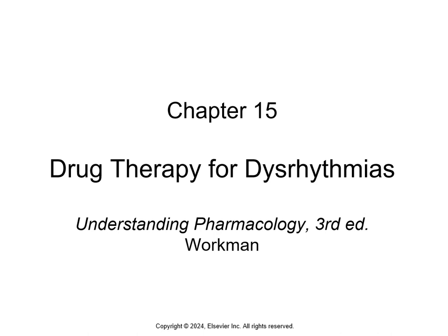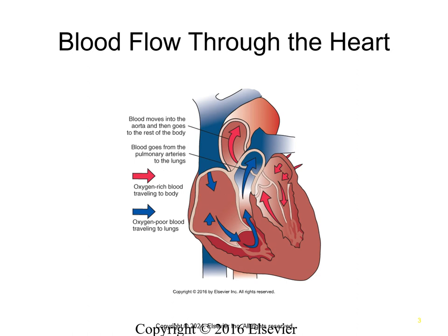Chapter 15 is over drug therapy for dysrhythmias. First, we have how the blood flows through the heart. Blood carries oxygen and nutrients to the tissues, drops off the oxygen and nutrients, and picks up waste or carbon dioxide. The right side of the heart gets that oxygen-poor blood back from the body and sends it to the lungs where we drop off carbon dioxide and pick up oxygen. The left side receives the oxygen-rich blood from the lungs and pumps it out to the body, and this cycle continues.